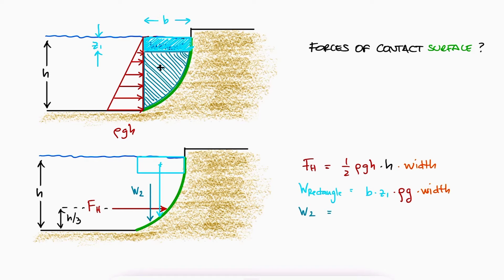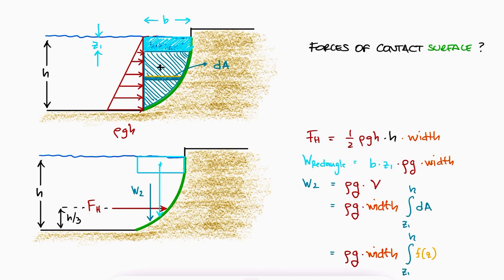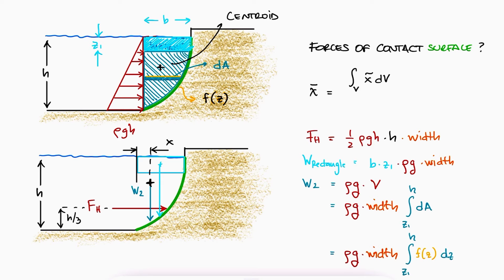A link is provided below if you haven't watched that yet. The equivalent force will be the specific gravity times the volume, which in terms of the integral is the width in the third dimension times the area — written as the integral over z of all the dA's along the z-direction. This is usually written as a function of z, known from the geometry of the floor or wall. The location of the equivalent load would be at the centroid of the volume.